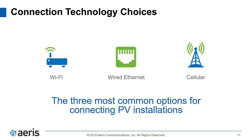As you move toward this connected future, you've got some standard connectivity options. The first is Wi-Fi, which is commonly available in most residences and commercial settings, really in place to provide consumer Internet access for computers, tablets, and phones. Second, even when Wi-Fi modems aren't deployed, there's still likely access to the Internet via wired Ethernet connection — either an installed Internet access point or a backhaul device you can plug in. The third option is cellular, where solutions use a cellular connection to send data out to the Internet, either by attaching an embedded modem or an external modem to the PV inverter or monitoring solution.